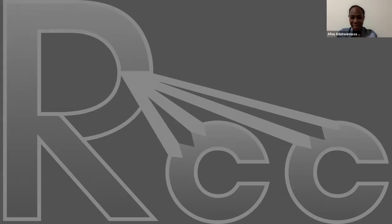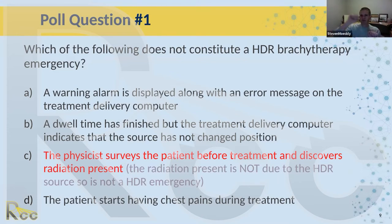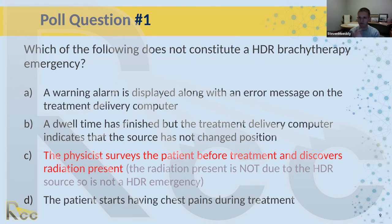The physicist surveying the patient before treatment and finding radiation present is not an HDR brachytherapy emergency. Before the patient enters the room, you should survey the room to confirm no radiation is present. You then survey the patient because they may have had a nuclear medicine procedure. You need that baseline so you don't get to the end of treatment and wonder whether radiation present is from the source or from a prior nuclear medicine procedure.